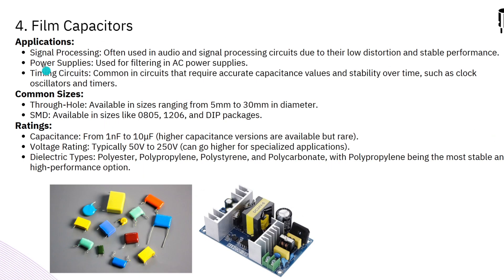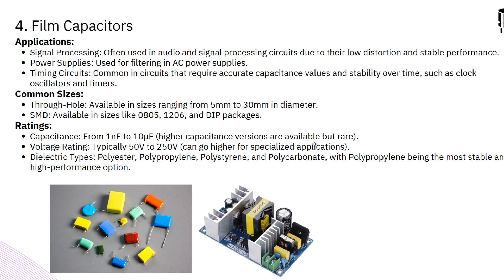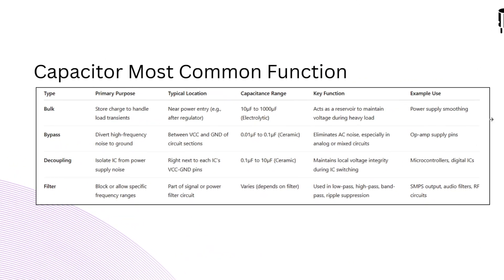Film capacitors are used in signal and audio processing due to their low distortion and stable performance. They are used for filtering in AC power supplies and in circuits requiring accurate, stable capacitance values — such as clock oscillators and timers. They are primarily through-hole components, though SMD packages exist. Capacitance ranges from 1 nanofarad to 10 microfarad. Voltage ratings range from 50V to 250V.